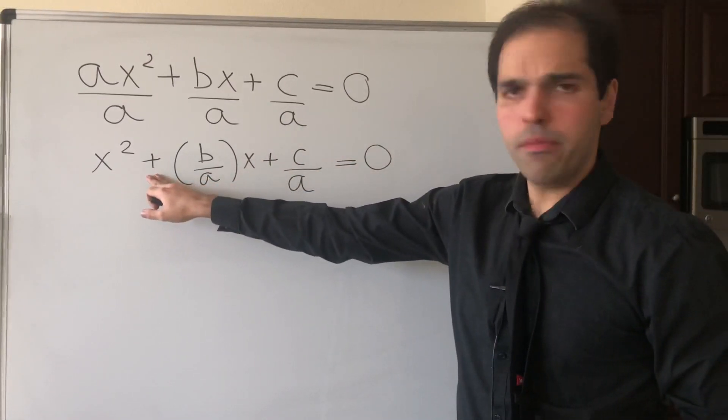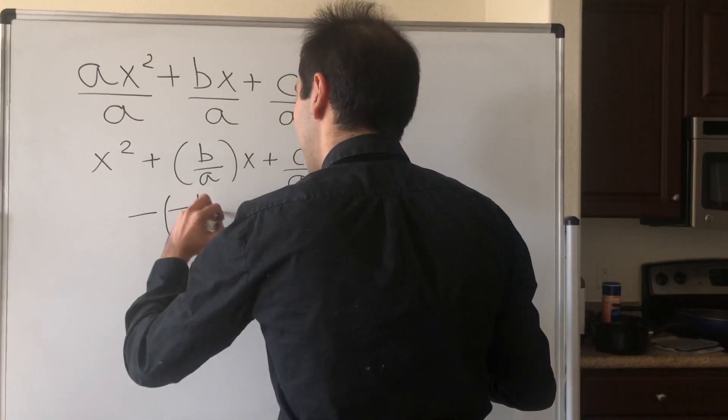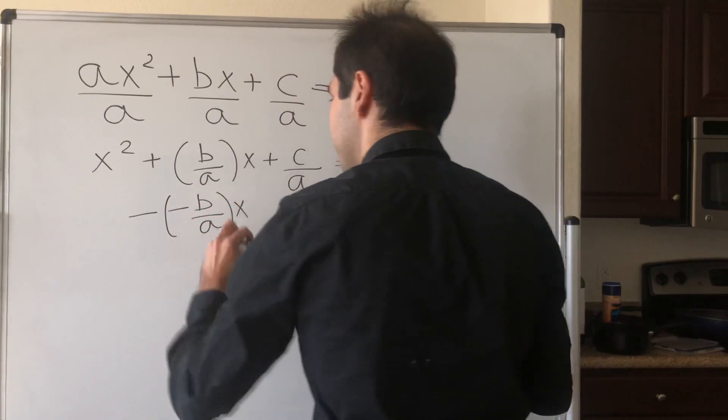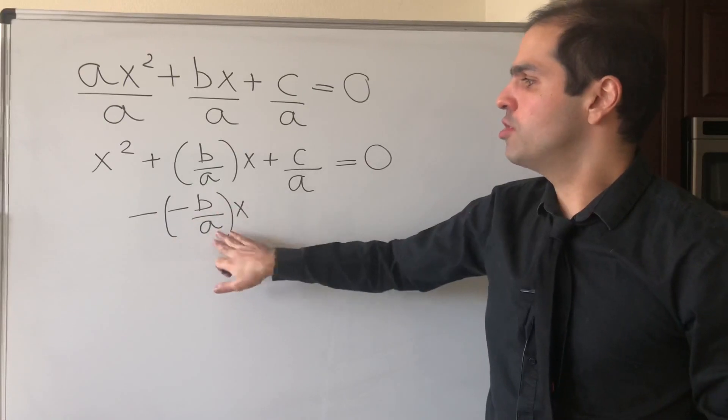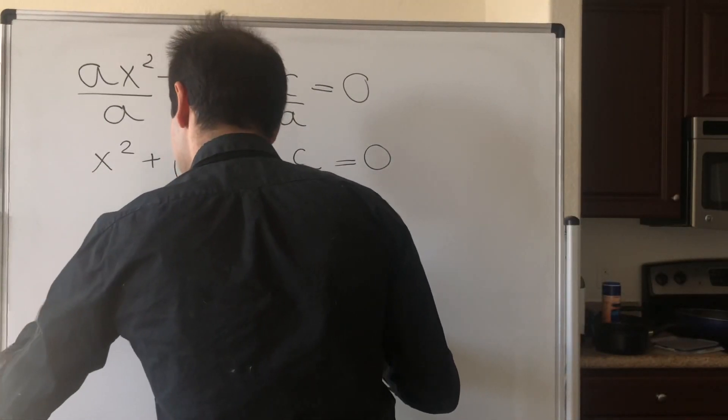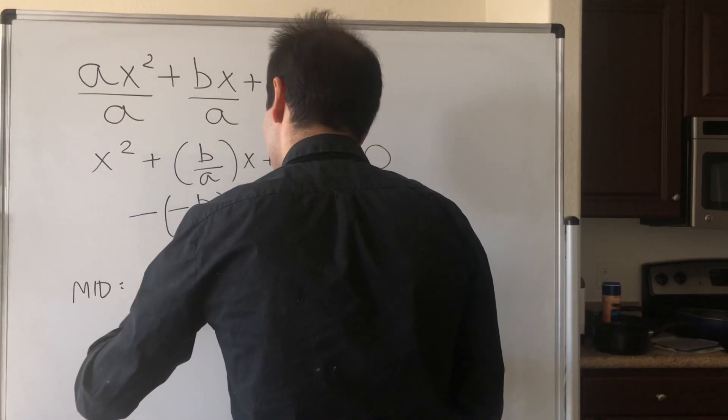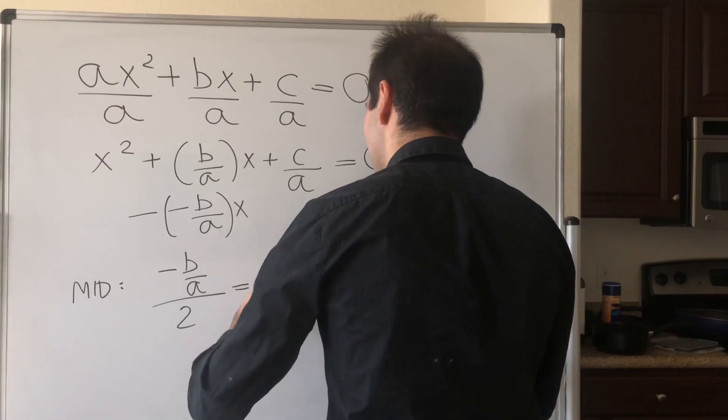In particular, remember here we need a minus sign, so we have minus (b/a)x. What this tells us is the midpoint is just -b/a divided by two, which is -b/2a.